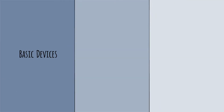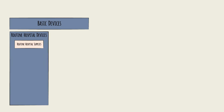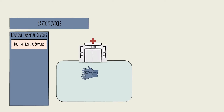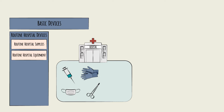First, there are basic devices. These are routine hospital supplies like surgical gloves and masks, syringes, tongue depressors, wound dressing supplies, and day-to-day hospital equipment like hospital beds and stethoscopes.